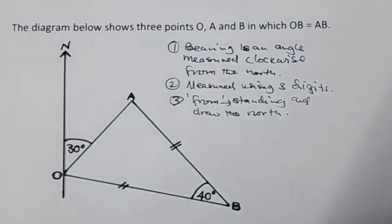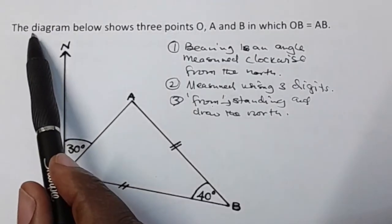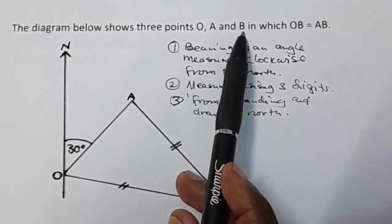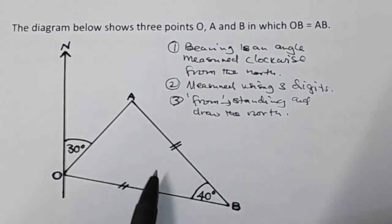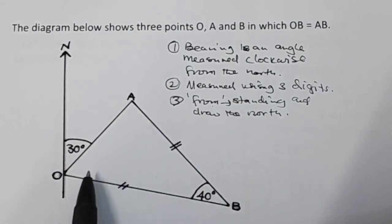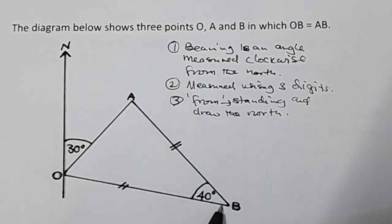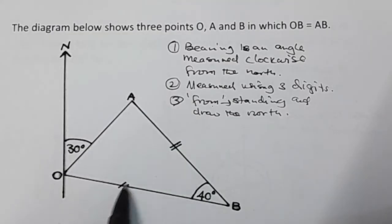With that information, let's go ahead and look at this question. The question says the diagram below shows three points O, A, and B, in which OB is equal to AB. Since these two sides are equal, this is an isosceles triangle.